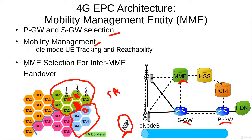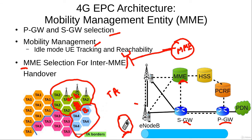Finally, another important function of the MME is MME selection for inter-MME handover. For example, if a UE is in the coverage area of one eNodeB and moves to another eNodeB which is connected to a different MME, a handover is needed. Since the target eNodeB is connected to a different MME, that new MME must be selected during the handover procedure, and this selection of the new MME is performed by the old MME.